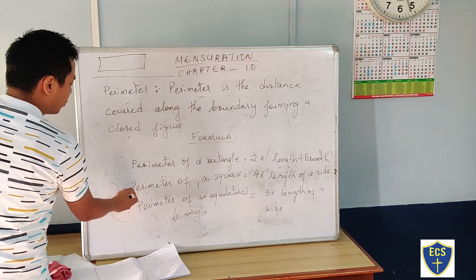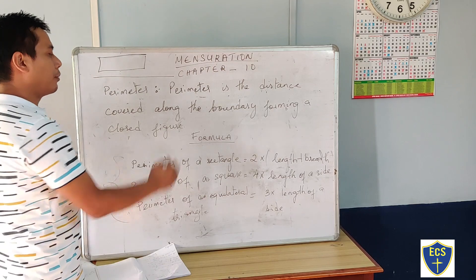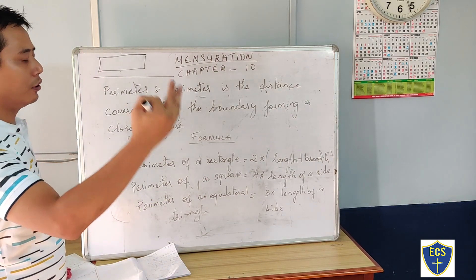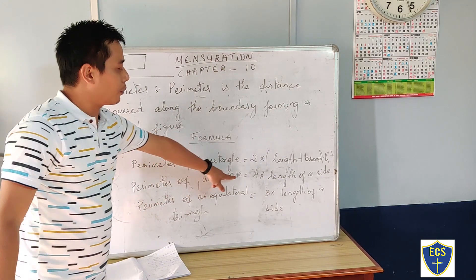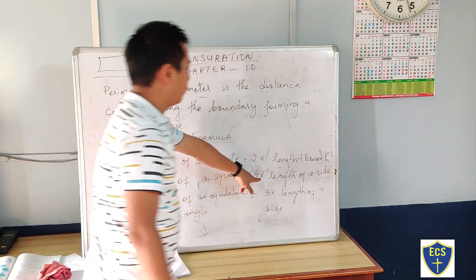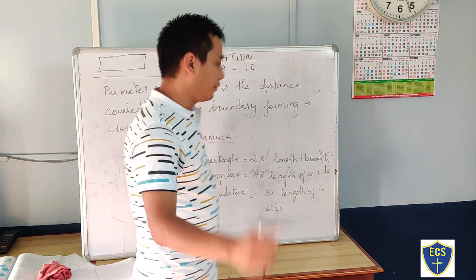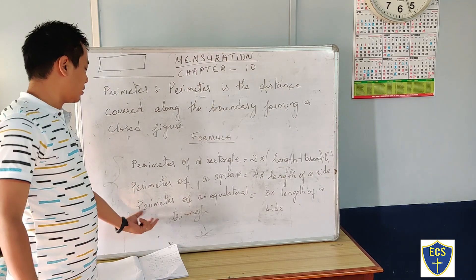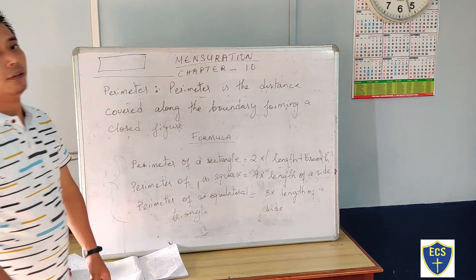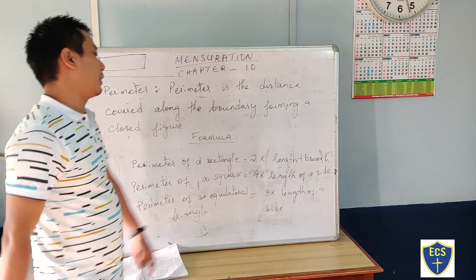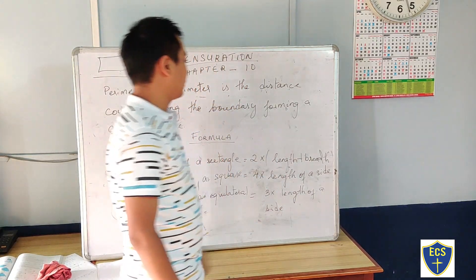Number 2 is perimeter of a square. Perimeter of a square is equal to 4 into length of a side. Number 3 is perimeter of an equilateral triangle — 3 into length of a side.